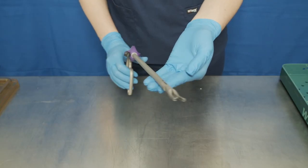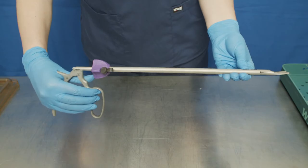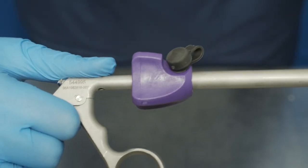After checking the applier jaws, inspect the knob for signs of wear and tear, specifically looking for chips or discoloration.